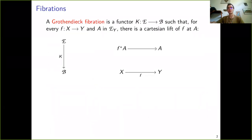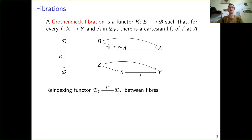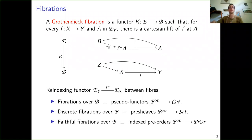Let's begin with a definition. Recall that an arrow in E is cartesian over f in A if it is terminal among arrows over f, and the choice of these cartesian lifts for every f gives us a family of re-indexing functors — an action of f on fibers. This is in fact part of an equivalence of fibrations over B with pseudo-functors, and this equivalence restricts to the other equivalences there.